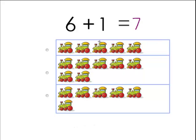We need to figure out which picture matches the 7. So that means we need 7 trains. So let's count the first one. There's 1, 2, 3, 4, 5 trains. Ok, that's not 7.